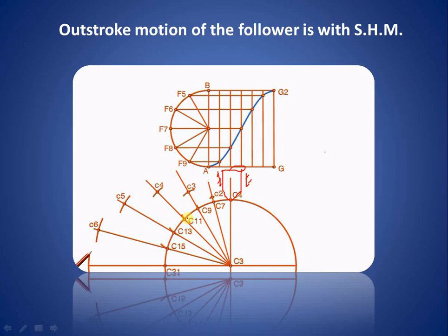Draw a base circle and divide it into six equal parts, corresponding to the six parts of the outstroke. The division points on the base circle are labeled C7, C9, C11, C13, C15, and C21, indicating six equal parts. Now transfer the distances: the first distance is transferred on the first radial line, the second on the second radial line, the third similarly, and so on until the entire stroke length is transferred. Then join all these points to get a smooth curve representing the cam profile.